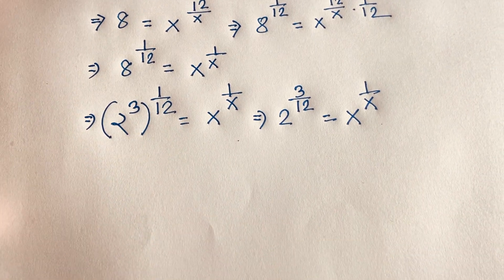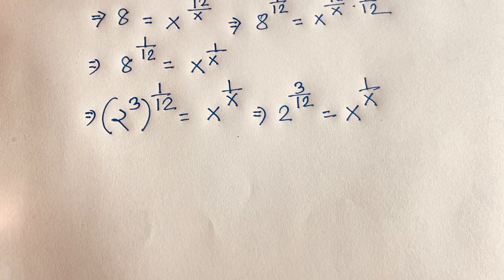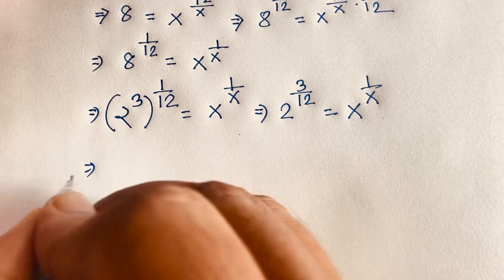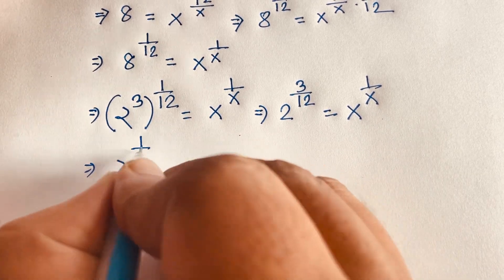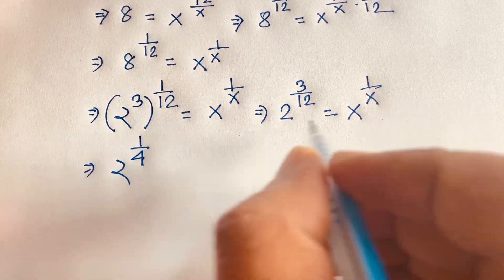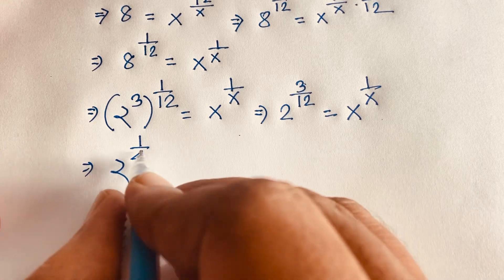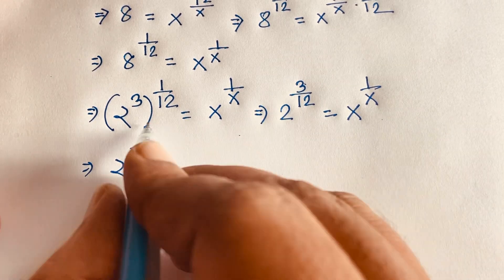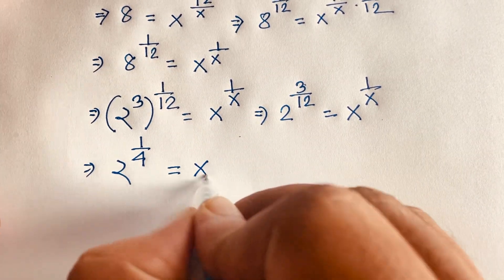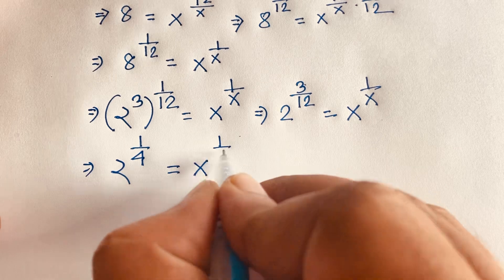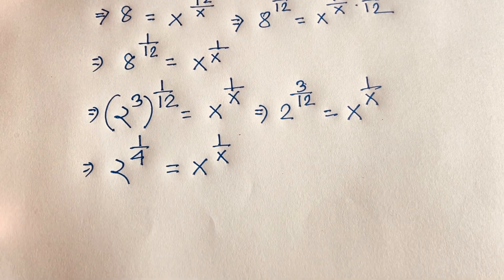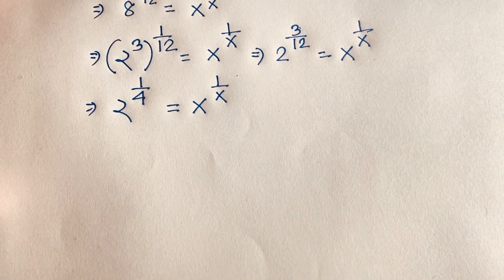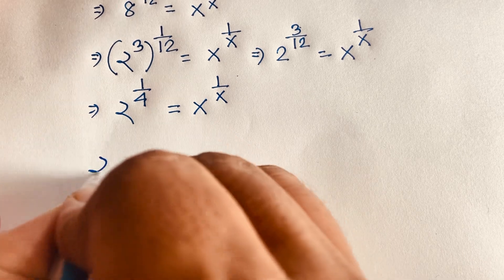Simplifying 3 over 12: 12 divided by 3 equals 4, so this becomes 2 to the power 1 over 4 is equal to x to the power 1 over x.